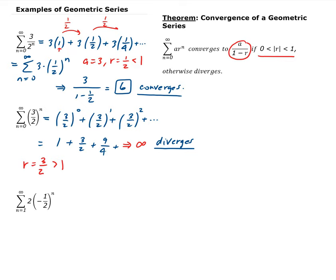For the next one, we have the summation of 2 times negative 1 half to the n, going from 1 to infinity. Here you have to be careful because we're starting from 1, not 0. Since our theorem requires starting from 0, we need to shift everything to 0 and then apply the theorem.